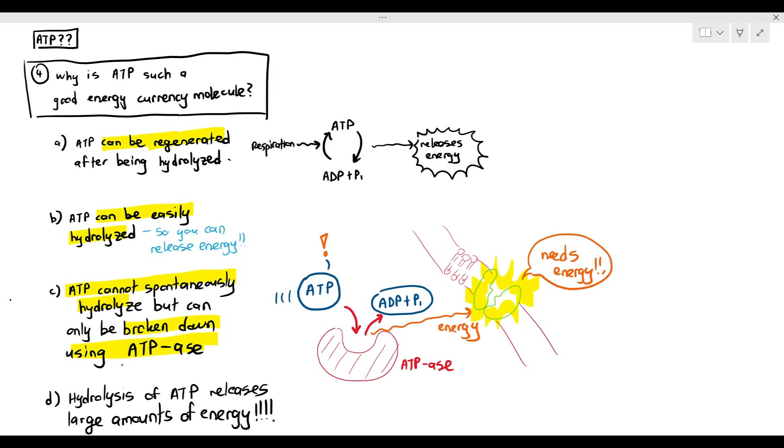And of course, last but not least, it's also good to know that the hydrolysis of ATP releases large amounts of energy. I mean, you want a lot of energy for your cells because, you know, cellular reactions require lots of energy. So this is why ATP is a good energy currency molecule.